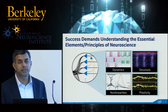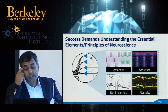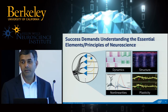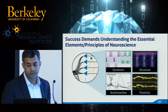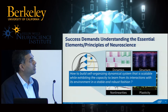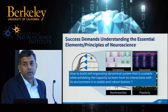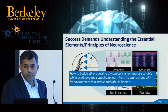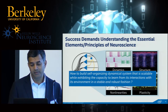This is where Intel is scratching its head about its role. There are three ideas and thought processes at Intel — very new, as I just joined in January. One: success would demand understanding the essential elements or principles of neuroscience. The key question is how to build self-organizing dynamical systems that are scalable — where you can add more neurons and synapses and have them naturally scale — while exhibiting the capacity to learn from interactions with the environment in a stable and robust, provably reliable fashion. It's a tall order, but of great interest to Intel.